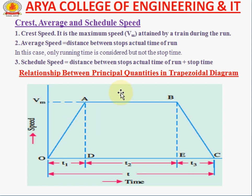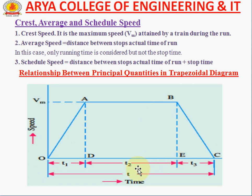Now we consider the relationship between principal quantities in the trapezoidal diagram. For all service types — urban, suburban, and main line — the general curve consists of acceleration, free running, and braking phases. The basic trapezoidal shape in the diagram is formed by points O to A, A to B, and B to C. The time from O to A is T1, from D to E is T2, and from E to C is T3. Total time is T in seconds and speed is in km per hour.